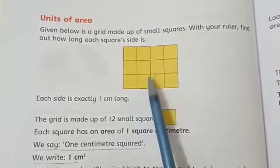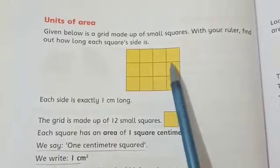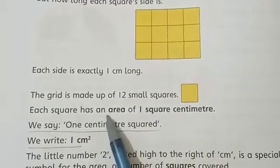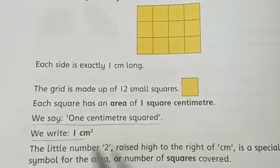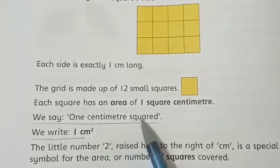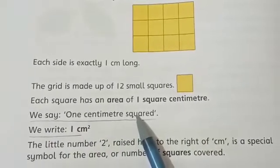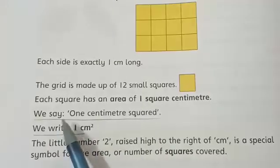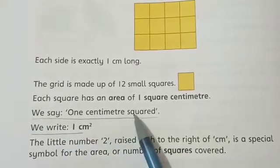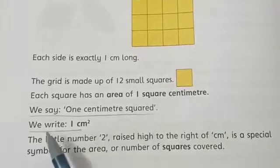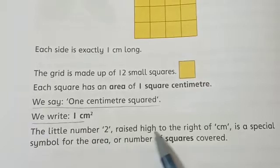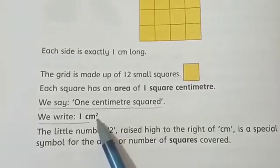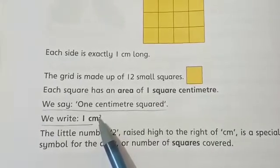One, two, three, four, five, six, seven, eight, nine, ten, eleven, twelve. Each square has an area of 1 square centimetre. We say 1 cm². We write 1 cm². The little number 2 raised high to the right of cm is a special symbol for the area or number of squares covered.